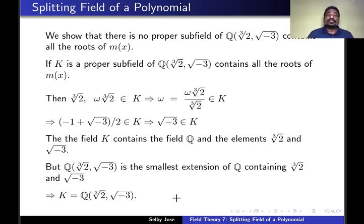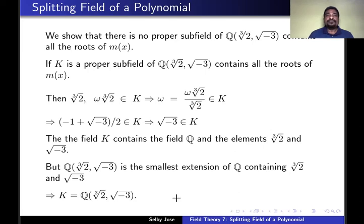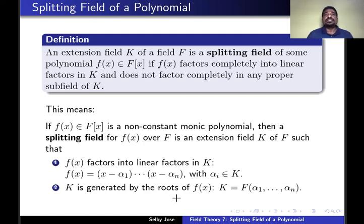So we have found the field Q(∛2, √(-3)), which contains all the roots of the minimal polynomial m(x) of ∛2, and there is no proper subfield of this field containing all the roots of m(x). Such fields have great importance in Galois theory, and we call them splitting fields. Let us see the formal definition of a splitting field.